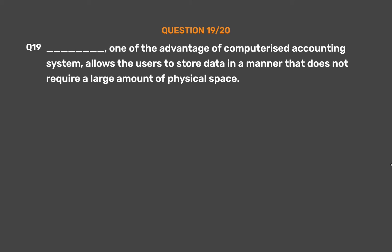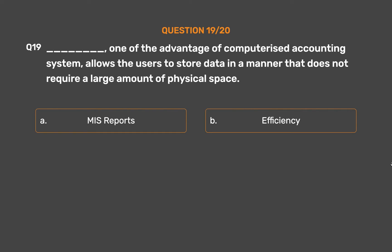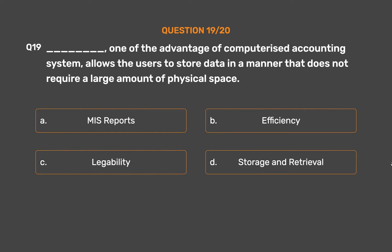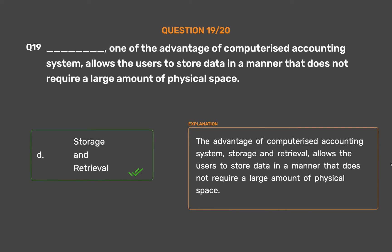Question number 19. Underscore, one of the advantages of computerized accounting system, allows the users to store data in a manner that does not require a large amount of physical space. Option A: Miss reports. Option B: Efficiency. Option C: Legibility. Option D: Storage and retrieval. The correct answer is Option D — Storage and retrieval. This advantage of computerized accounting system allows users to store data without requiring a large amount of physical space.